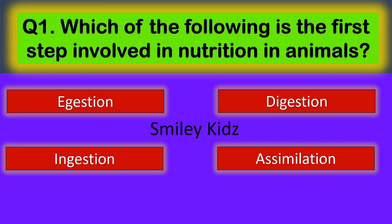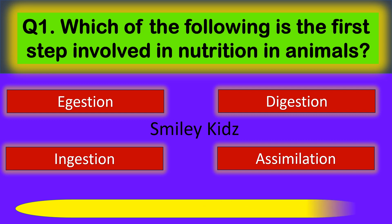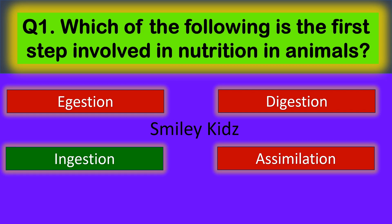Question number 1. Which of the following is the first step involved in Nutrition in Animals? Your options are Adhesion, Digestion, Ingestion, and Assimilation. The correct answer is Ingestion. Ingestion is the first step involved in Nutrition in Animals.